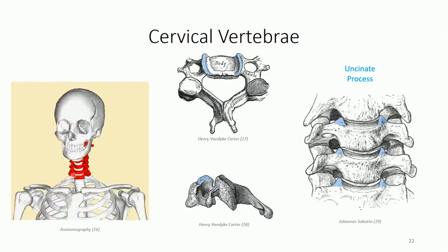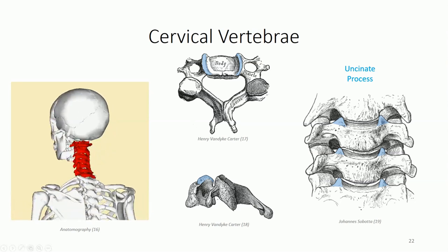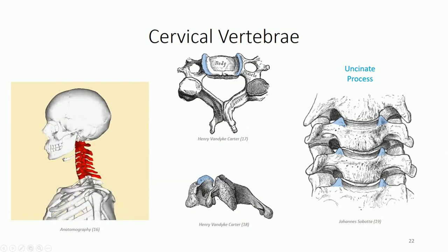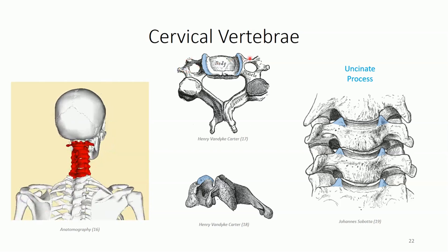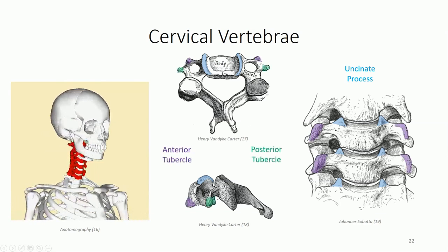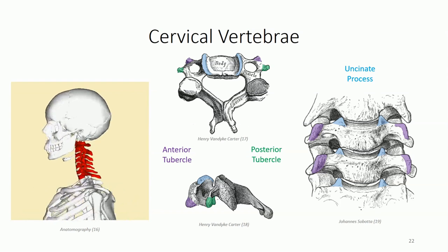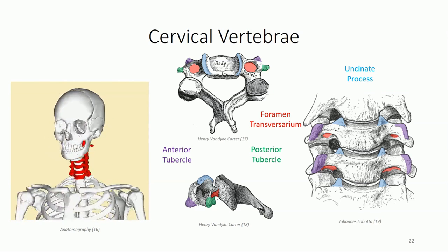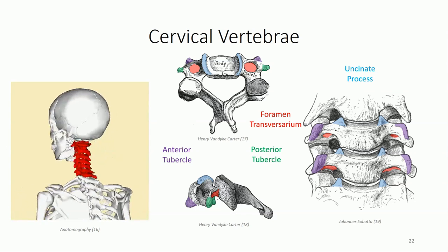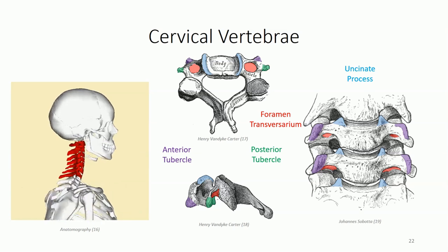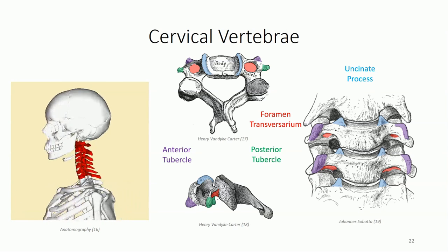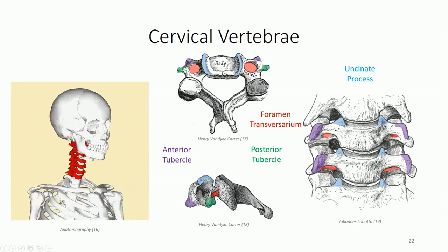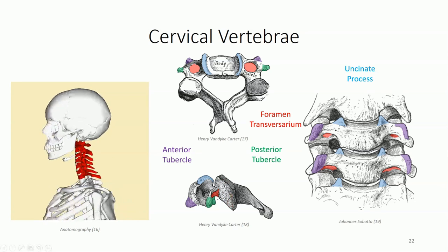Most prominent is the C7 spinous process, often referred to as the vertebral prominence. It's the most prominent superficial structure at the back of the neck and provides an important landmark for identifying and counting vertebrae. The bifurcation in the transverse processes is more universal, forming the anterior and posterior tubercles for muscle attachment. Probably the most prominent distinctive feature of the cervical vertebrae is the foramen transversarium, an opening found within the transverse processes of all cervical vertebrae. The vertebral artery passes through the foramen of the first six vertebrae, while the vertebral vein passes through at all vertebral levels. The joints made by the superior and inferior articulating processes lie in an oblique plane, running from antero-superior to postero-inferior.